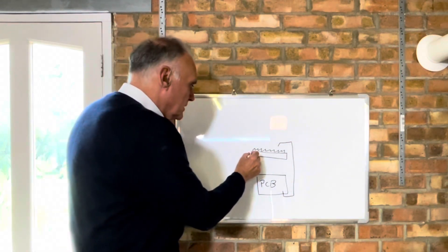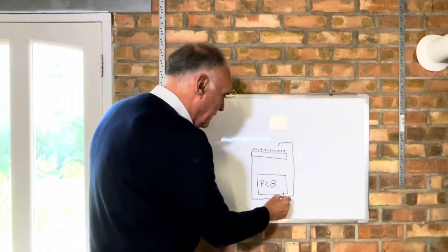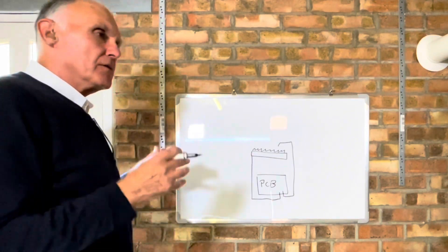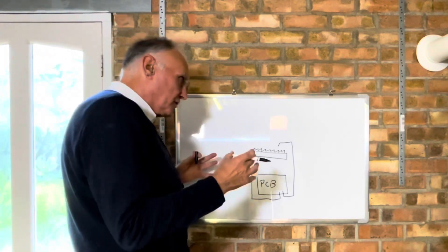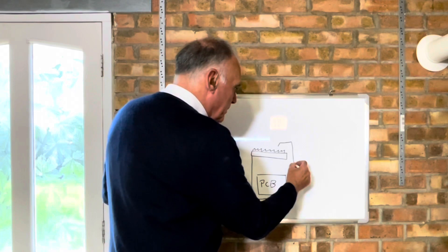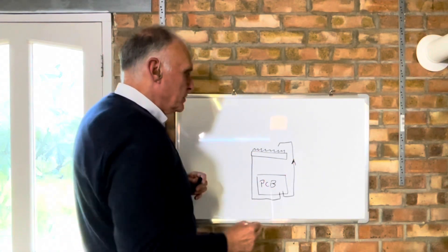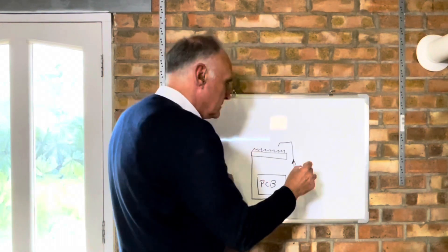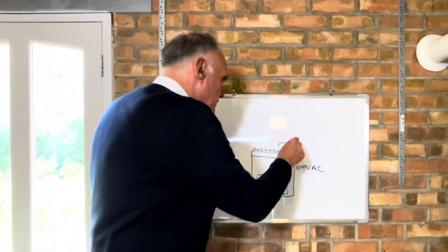We have a lead from the PCB up to a probe that sits in the flame and a ground from the burner back to the PCB. Now, any details I give you relate to Vaillant boilers, but I think you'll find this works the same way.